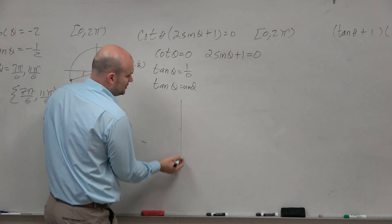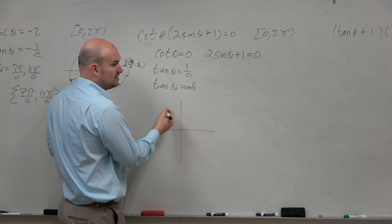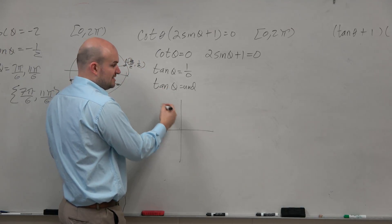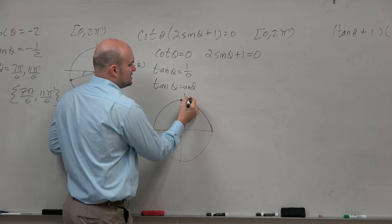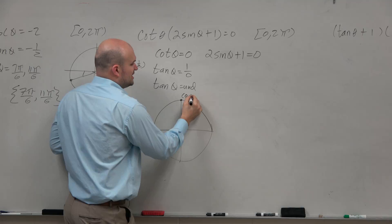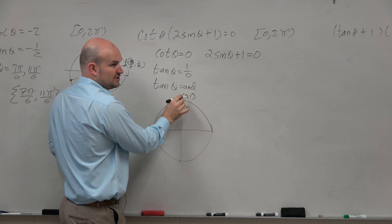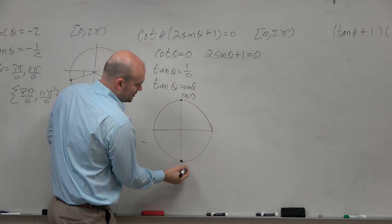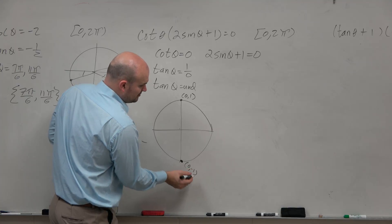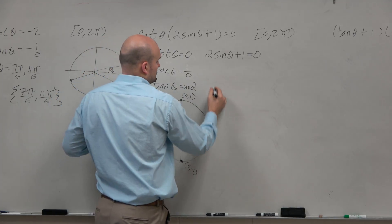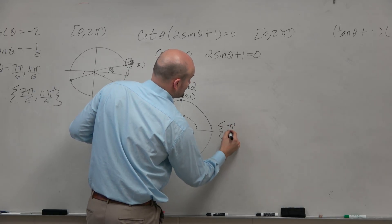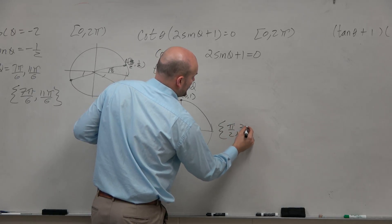So we go back to our unit circle and we say, let's see, tangent means that'd be 1 over 0. So wouldn't you guys agree y over x is 1 over 0 here? Wouldn't you guys agree over here? 0 comma negative 1, that's undefined too? So those two angles are pi over 2 and 3 pi halves.